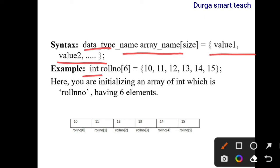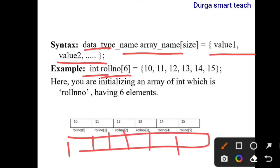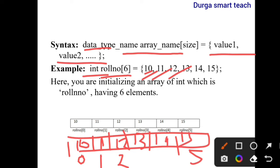Here, data type is int, array name is role_number, size is 6. Whenever you declare it, 6 memory allocations are allocated. You can give the values 10, 11, 12, 13, 14, and 15. Array index starts from 0 to n minus 1, that is 5. First element is stored at 0th position, second at index 1, 12 at index 2, 13 at index 3, 14 and 15 similarly. Here you are initializing an array of int named role_number having 6 elements.